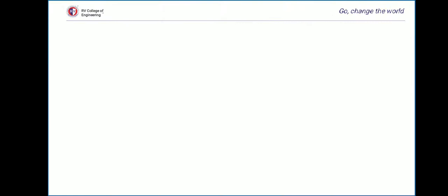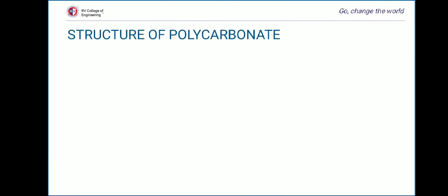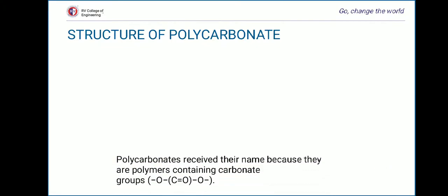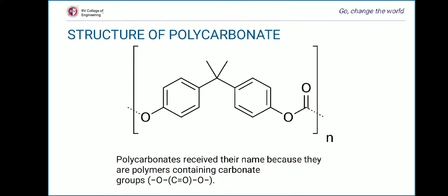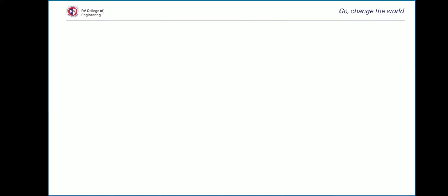We will now learn about the structure of polycarbonates. Polycarbonates receive their name because they are polymers containing carbonate groups. The carbonate group is a C double bond O group, and there are N number of C double bond O bonds in these polymers.